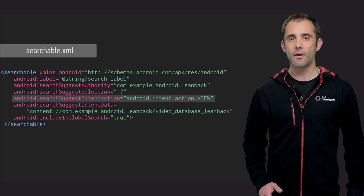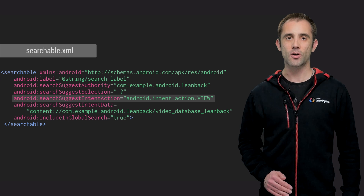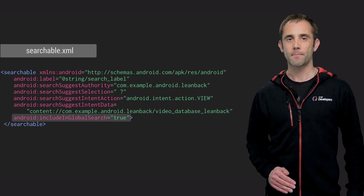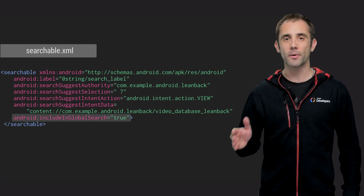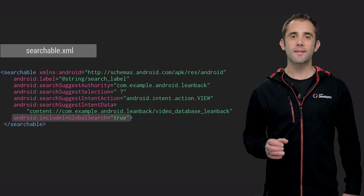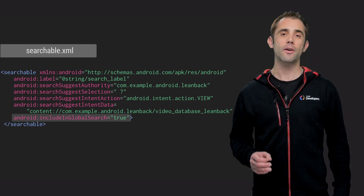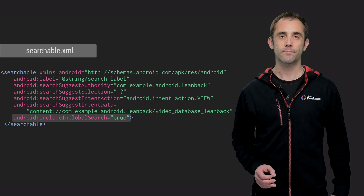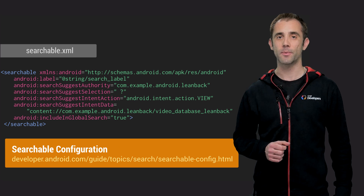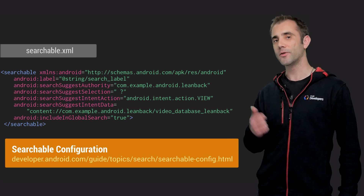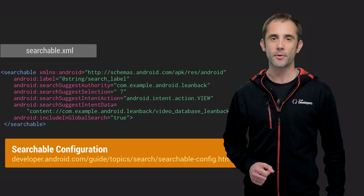This is a deep link into your app and should go straight to the selected content. Finally, since we want to surface our results globally, we need to set the include in global search attribute value to true. For more detailed information on other attributes, you can always refer to this link in the Android developer documentation.